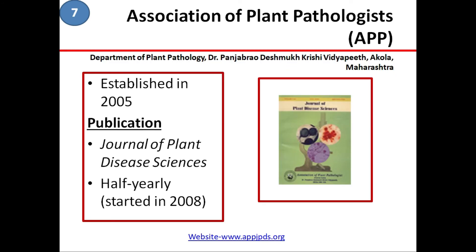Next comes Association of Plant Pathologists, based in Department of Plant Pathology, Dr. Panjabrao Deshmukh Krishi Vidyapeeth, Akola, Maharashtra. This was established in the year 2005. They also publish a journal called Journal of Plant Disease Sciences, which started in the year 2008 and is published half yearly — two issues in one year.